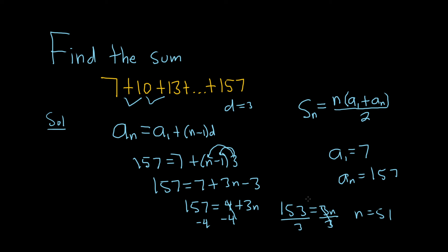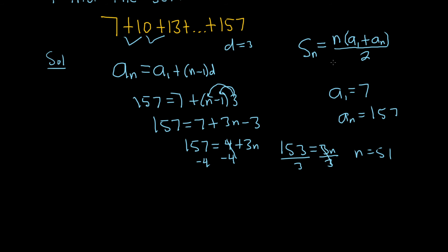So now all we have to do is plug everything into our formula. The sum of the first 51 terms of an arithmetic sequence is equal to n, which is 51, times a sub 1, which is 7, plus a sub 51, which is 157, and it's all divided by 2.